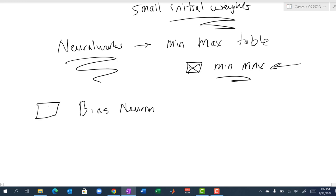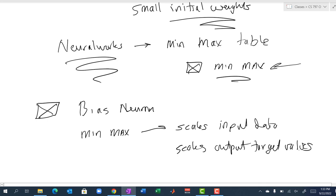So three things: we've reviewed the idea of a bias neuron, and in fact there's a check box in NeuralWorks for that. We've talked about the min-max table, which scales the input data and it scales the output target values used in the training. So all networks will do the bias and the min-max.